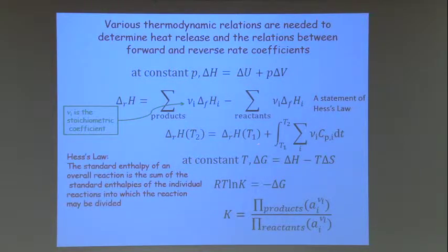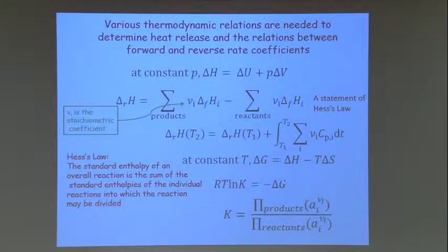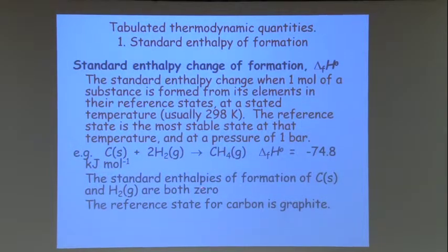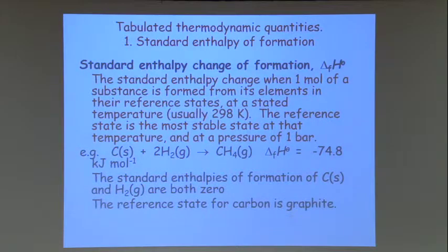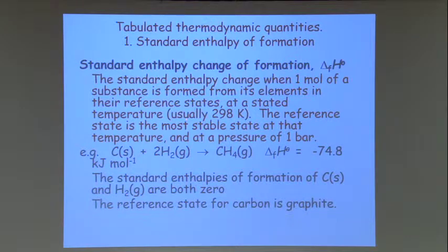As a reminder: at constant pressure, delta H equals delta U plus P delta V. The enthalpy change in a reaction is given by the sum of the enthalpies of the products minus those of the reactants with stoichiometric coefficients — a statement of Hess's law that the standard enthalpy of an overall reaction is the sum of the standard enthalpies of the individual reactions. We want to know the enthalpy change as a function of temperature, and so we need temperature-dependent heat capacities and this integral representation.